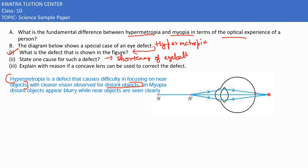Or you can write the focal length of the eye lens becomes too long. When focal length grows, the defect will also occur.